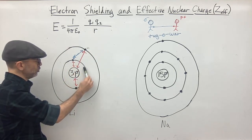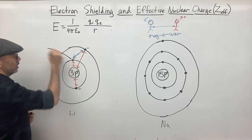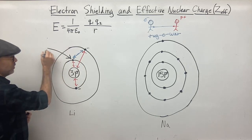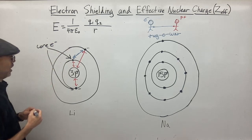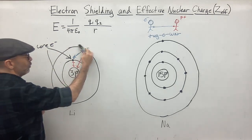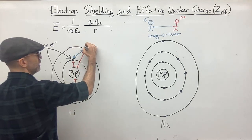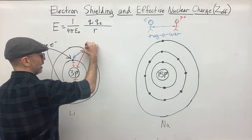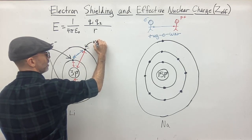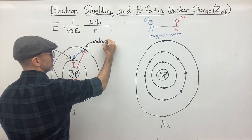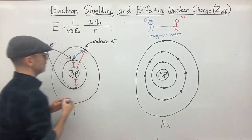So here in my atom, we have two inner electrons. These inner electrons we're going to call core electrons. The outermost shell we call the valence shell, and the electrons in the valence shell are your valence electrons.